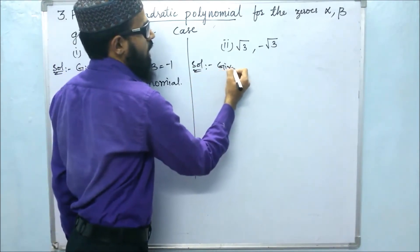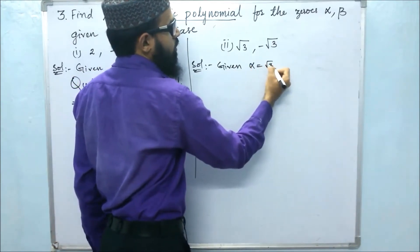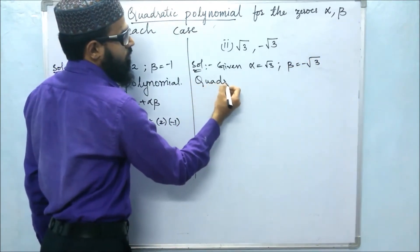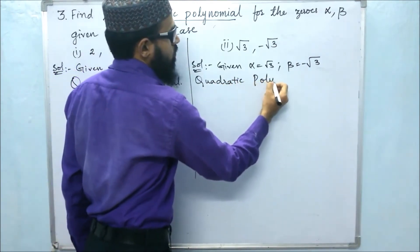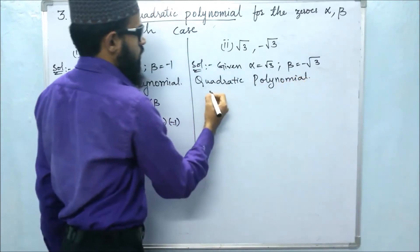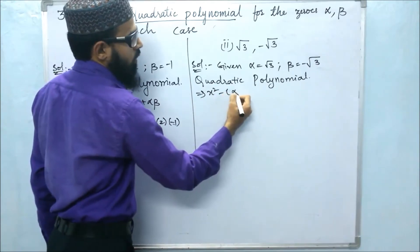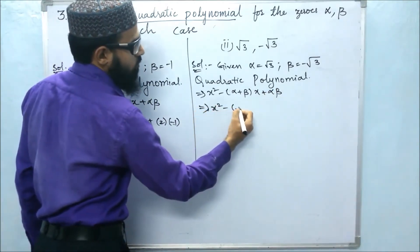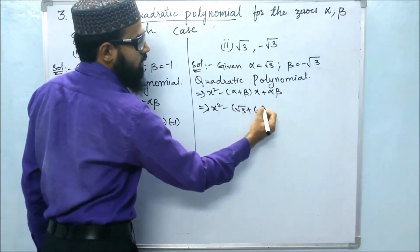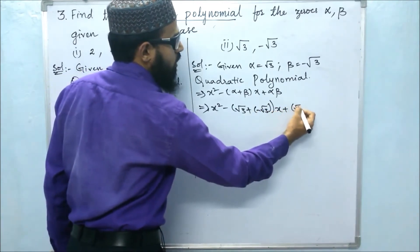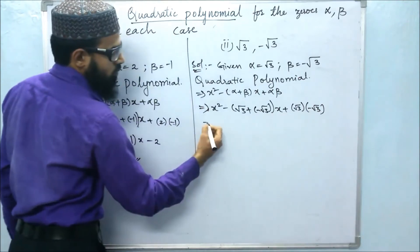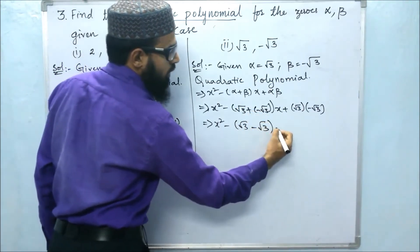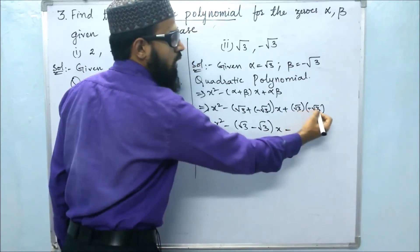Next, what is given? The roots are alpha is root 3 and beta is minus root 3. The quadratic polynomial formula is x squared minus (alpha plus beta) into x plus alpha beta. So: x squared minus (root 3 plus minus root 3) x plus (root 3 into minus root 3), which gives x squared minus 0 into x plus (minus root 3 times root 3), that is minus 3.